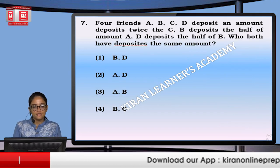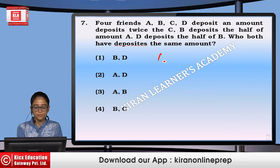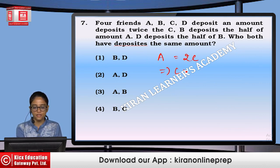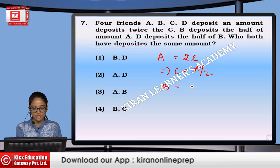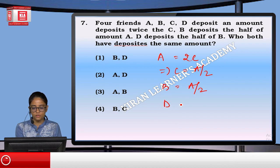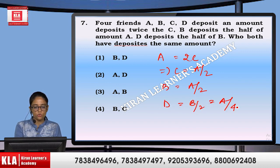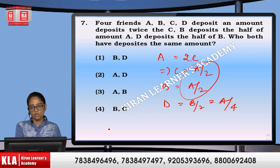Four friends A, B, C, D deposit amounts. A deposits twice of C, so C equals A by 2. B deposits half of A, and D deposits B by 2, which is A by 4. So who deposited the same amount? B equals A by 2 and C equals A by 2 — that is B and C. Option number 4.